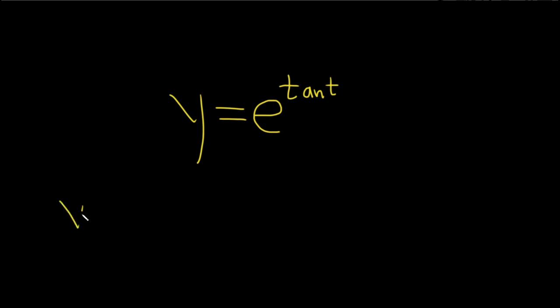So the chain rule says when you take the derivative, you have to take the derivative of the outside function first. So your outside function is e to the x or e to the t, and your inside function is tan t.